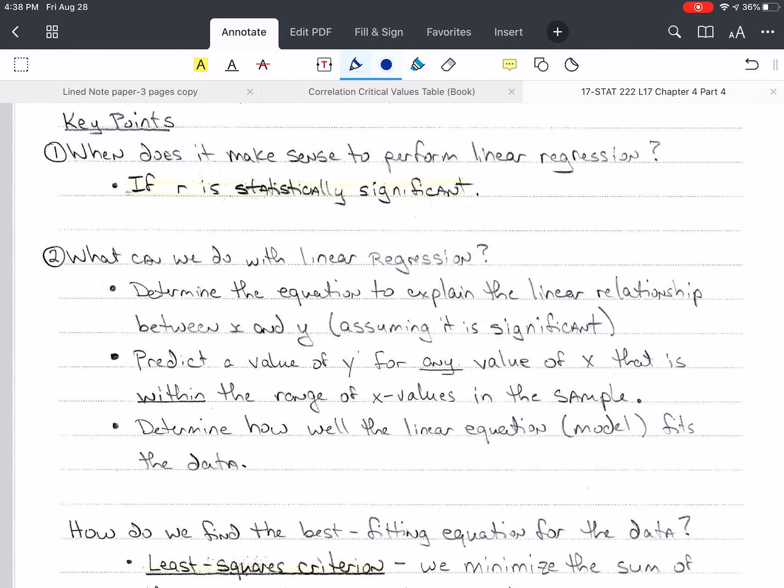Key points here. First, how do we know when it makes sense to do linear regression? Because we use linear regression to make predictions. The answer is, if R is statistically significant, then it makes sense to do linear regression, otherwise it does not.